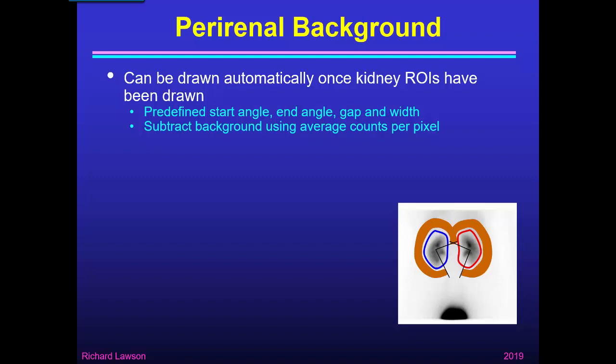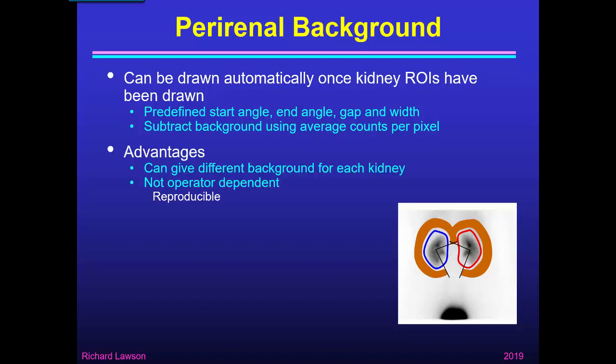The software will then subtract the background using the average counts per pixel, as I explained in part 4. The advantages of this method are that it gives different background regions for left and right kidneys, and it's not operator-dependent, which means it's reproducible. So if different operators draw the kidney regions, you'll still get the same background region — it doesn't depend on the individual operator.